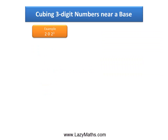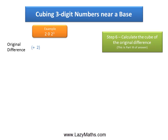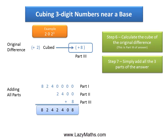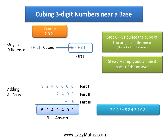Part 3 is calculated simply by taking the original difference, positive 2, and cubing it. A cube of 2 is 8, or 2 times 2 times 2 equals 8. So 8 becomes part 3 of the answer. Finally, as all the parts are positive, we put them all one above the other and add them together to get the final answer: 8,242,408. So 202 cube is 8,242,408.